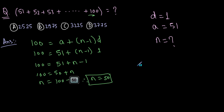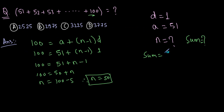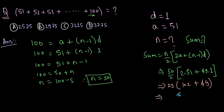Now we calculate the sum using the formula: sum equals n over 2 times (2a plus (n minus 1) times d). Substituting: 50 over 2 times (2 times 51 plus 49 times 1), which gives 25 times (102 plus 49), equals 25 times 151. Calculating 25 times 151 gives 3775. So our answer is option D.